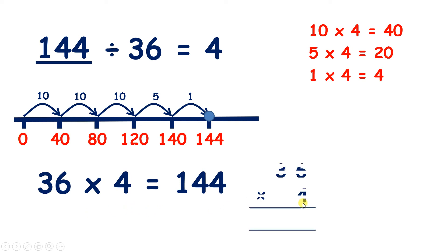And we could have answered using column multiplication. 6 times 4 is 24, so we can write 2 under our tens and 4 in our units. Now 3 times 4 is 12, and 12 plus 2 is 14. So that gives us our missing number, 144.